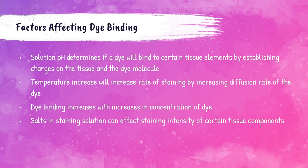Several factors affect the binding of dye to tissue. The pH of a solution can affect it. If the temperature is increased, the rate of staining will also increase because the tissue will swell. As the concentration of the dye increases, so does the binding of the dye. Depending on the components of the tissue, salts can increase or decrease the intensity of the stain due to competition between salt ions and dye ions trying to bind to the tissue.